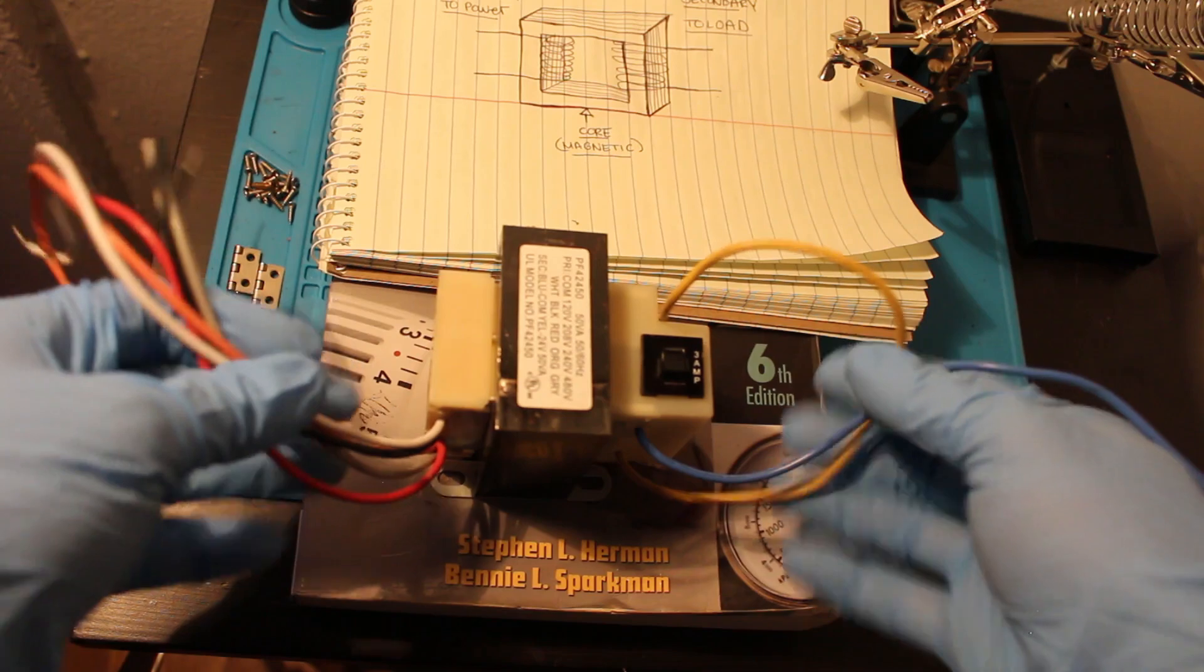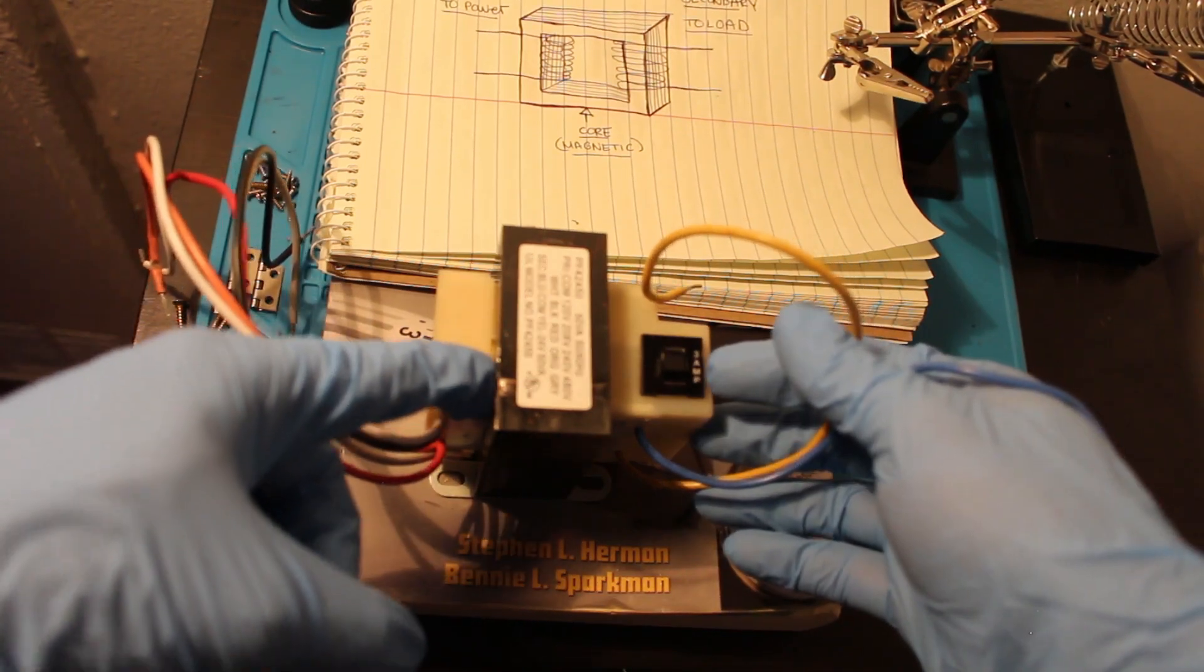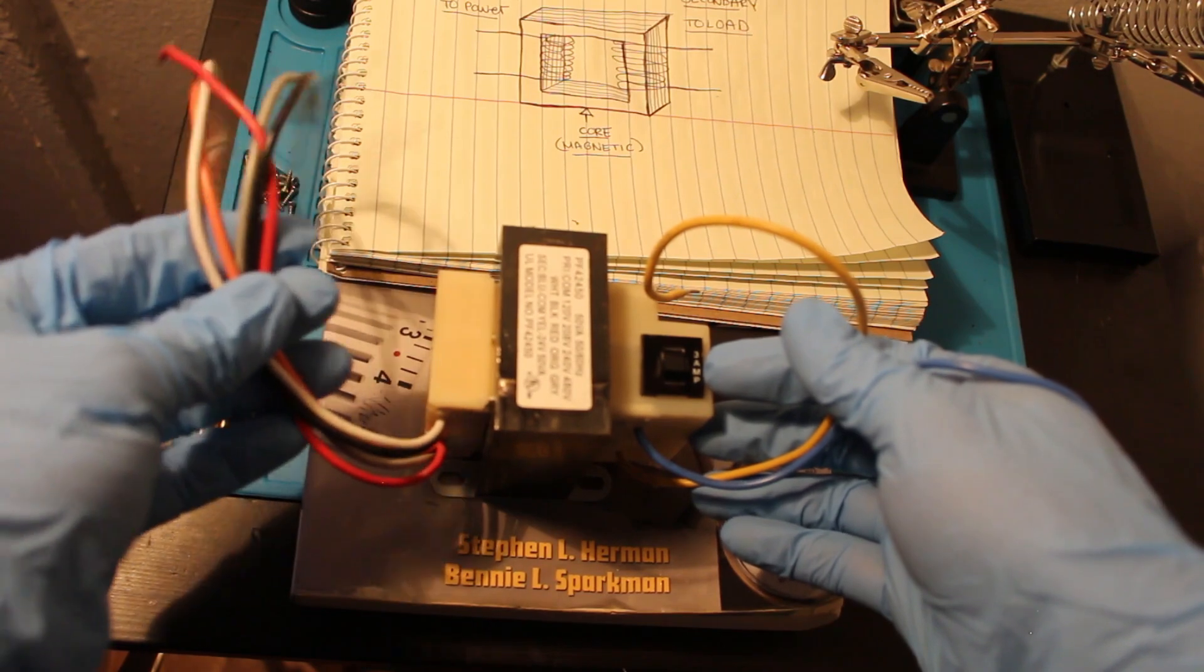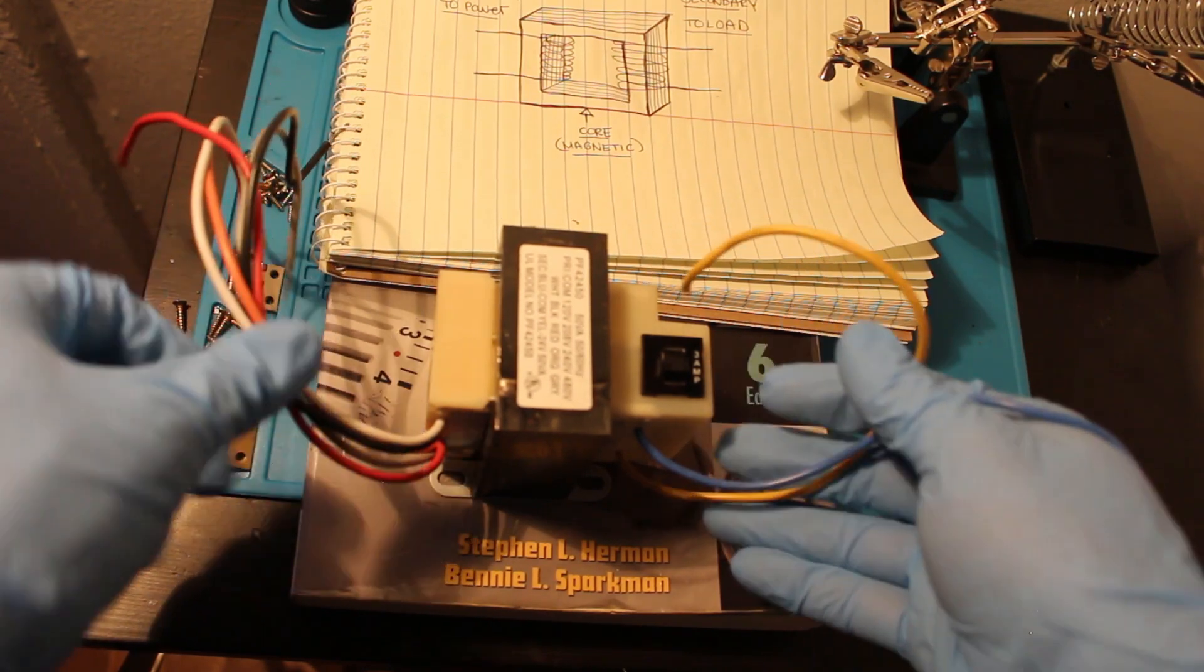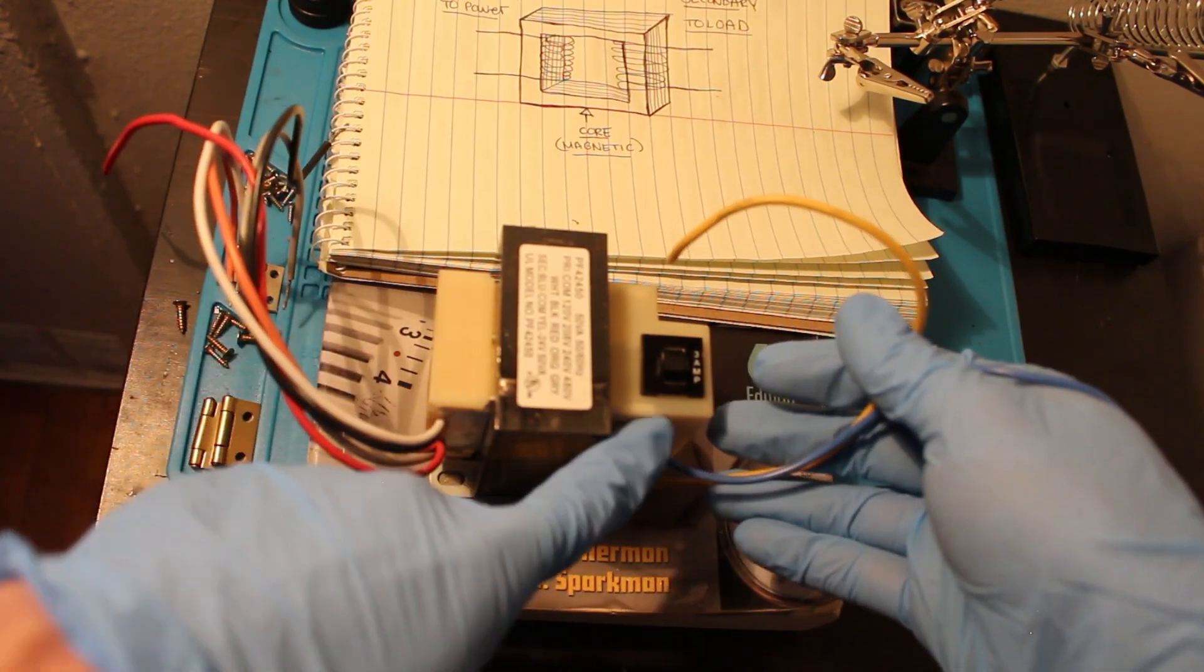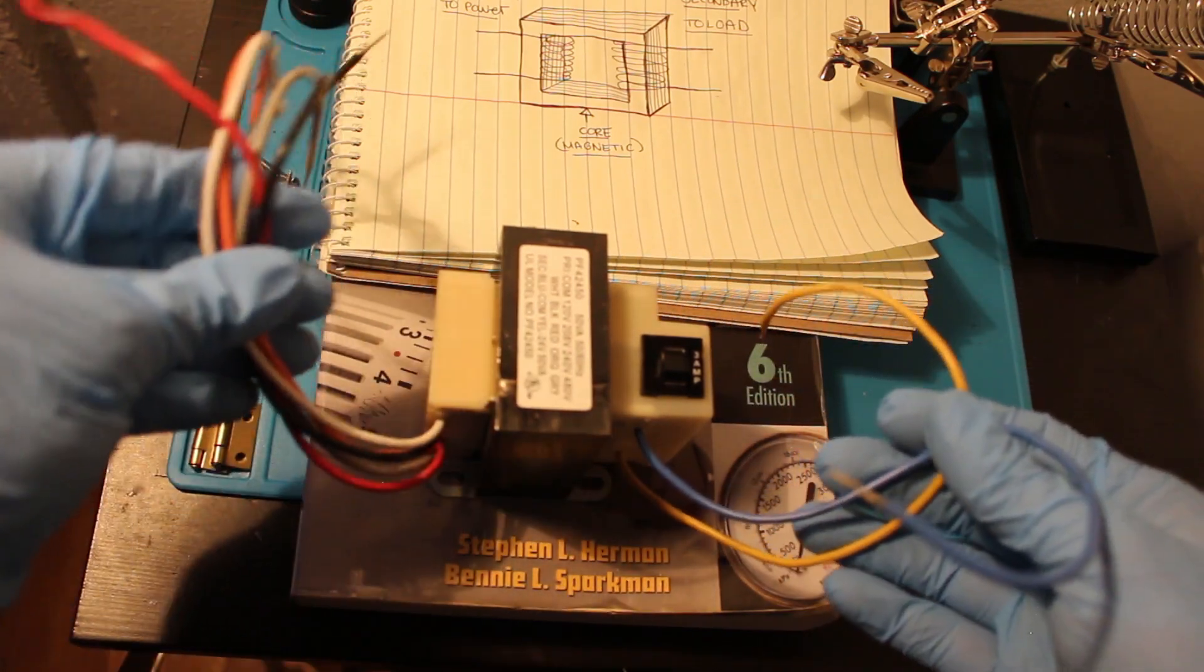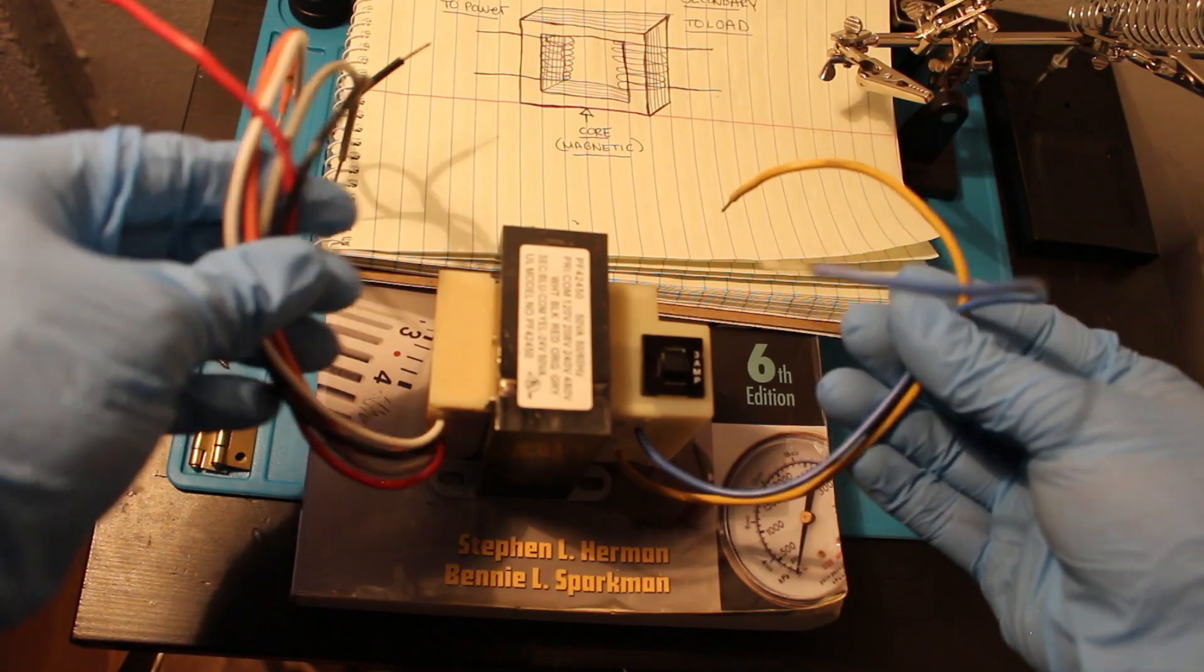So there's a copper winding wound around this core on the opposite end that attaches to these wires. So this is your primary, this is your secondary.